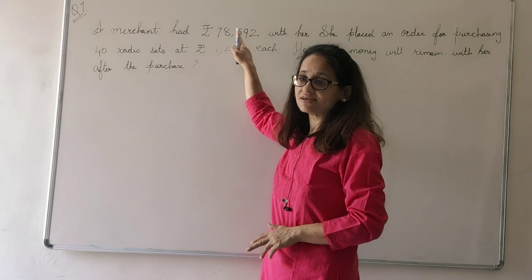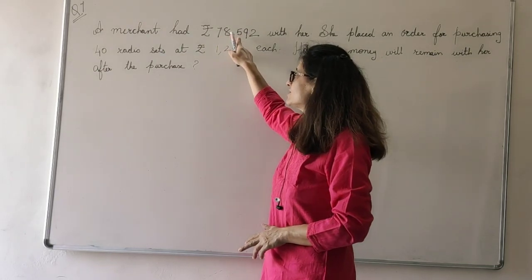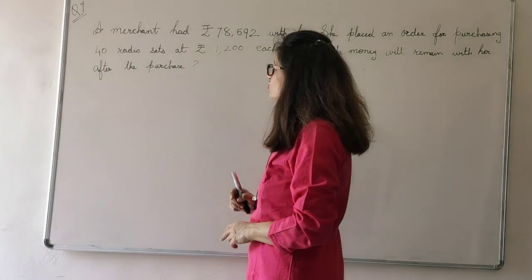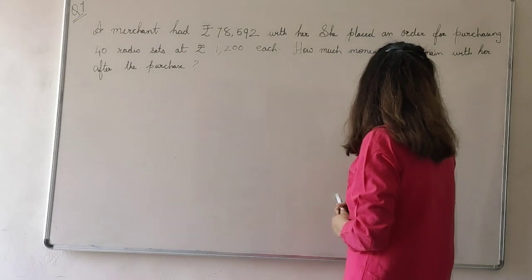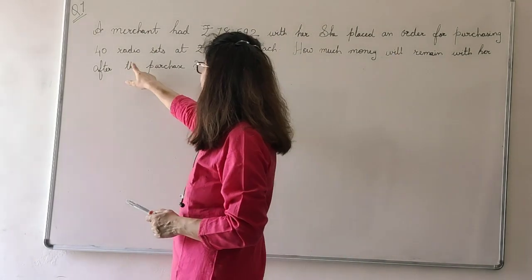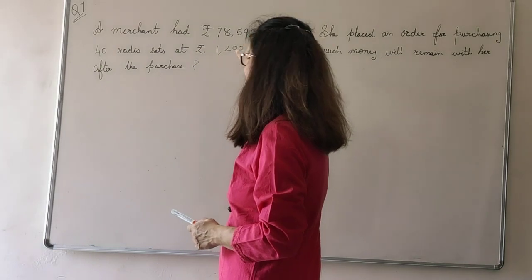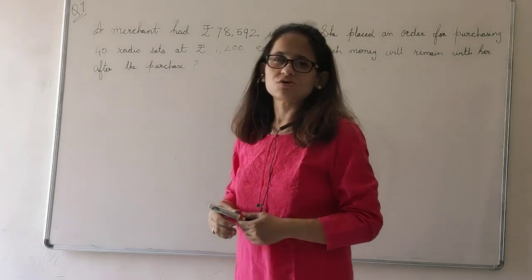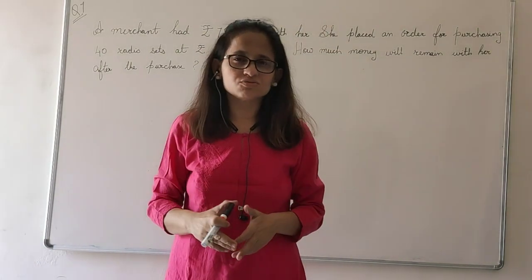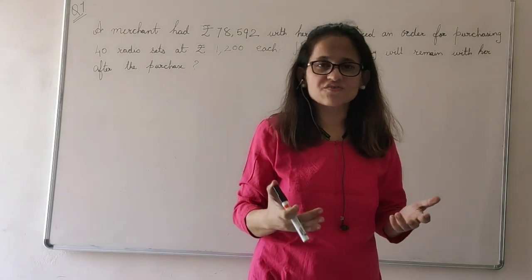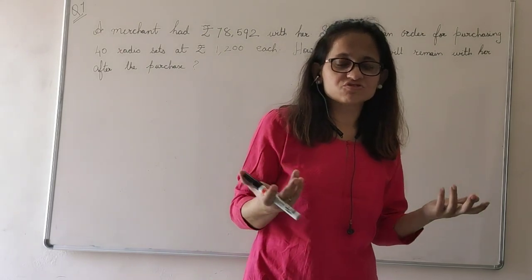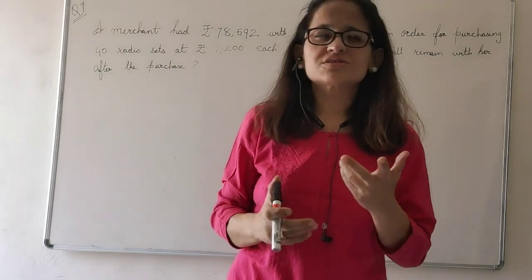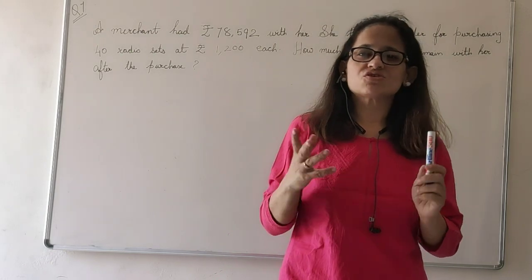How many rupees she had? 78,592. She places an order for purchasing 40 radio sets at rupees 1200 each. Now she thought it is lockdown. Children want to listen to FM radio, to songs. So she thought that radio sets she could sell easily.